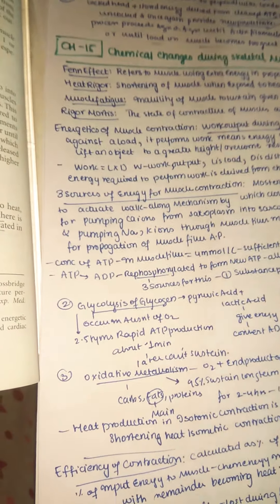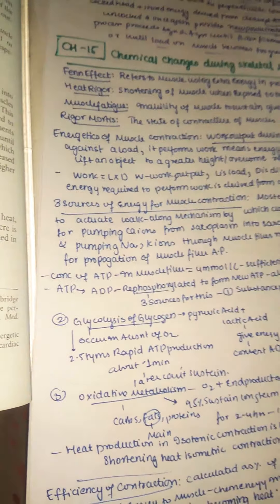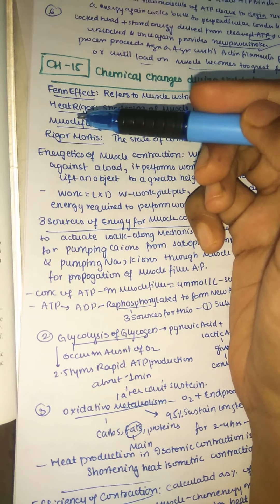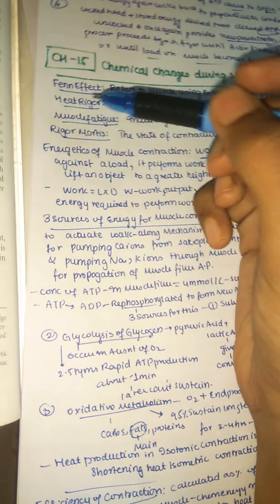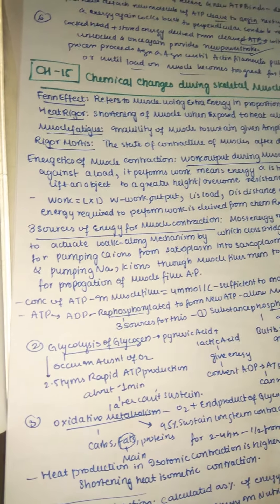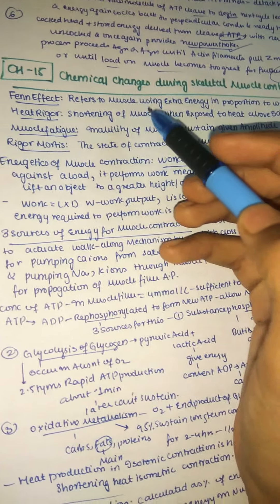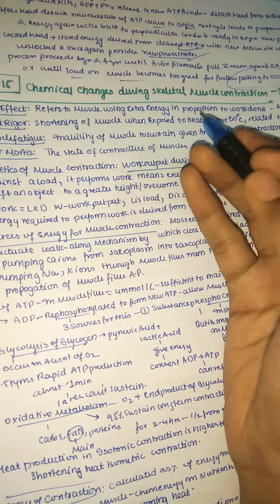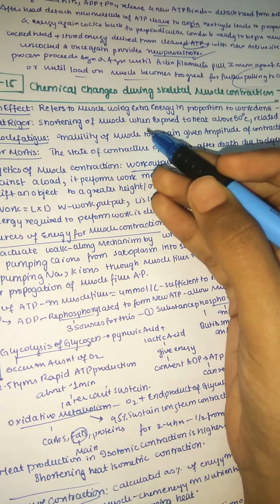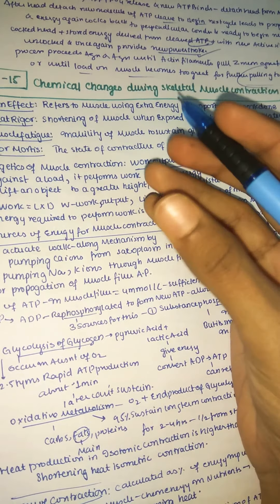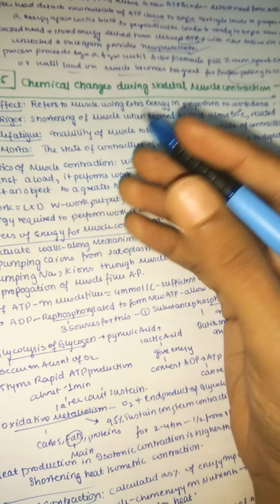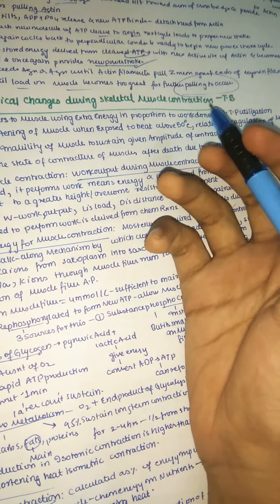First, we need to take notes on different terms related to this topic. The first one is the Fenn effect. The Fenn effect mainly refers to the muscle using extra energy in proportion to work done — that is, the muscle requires extra energy in the form of ATP to produce a specific work.